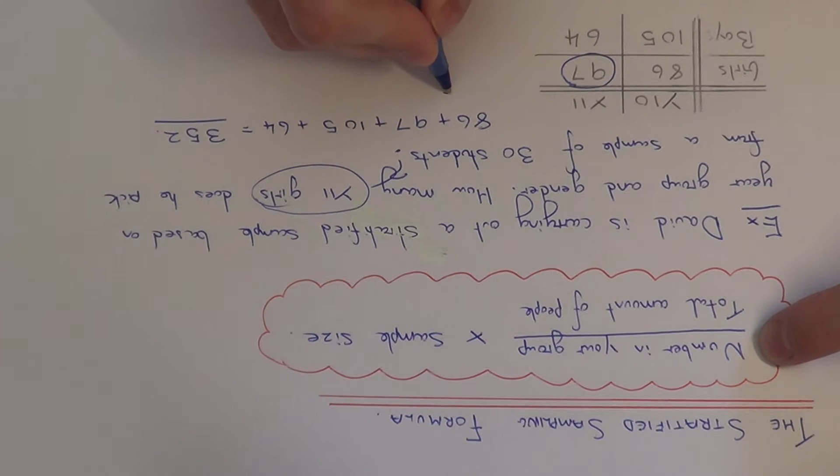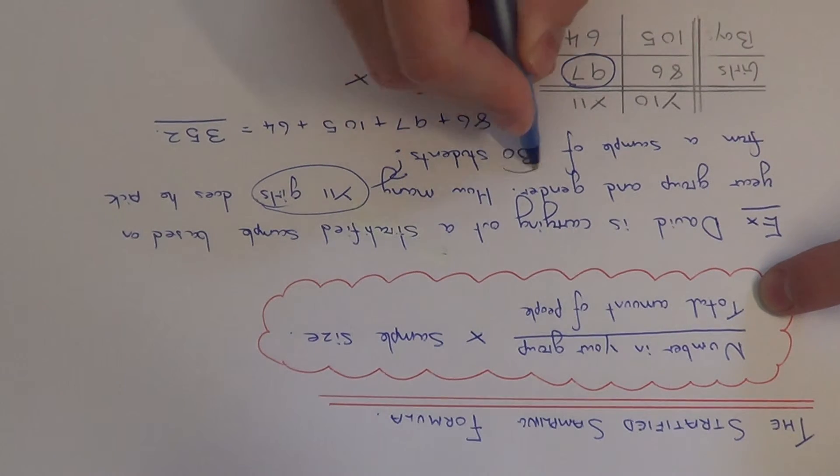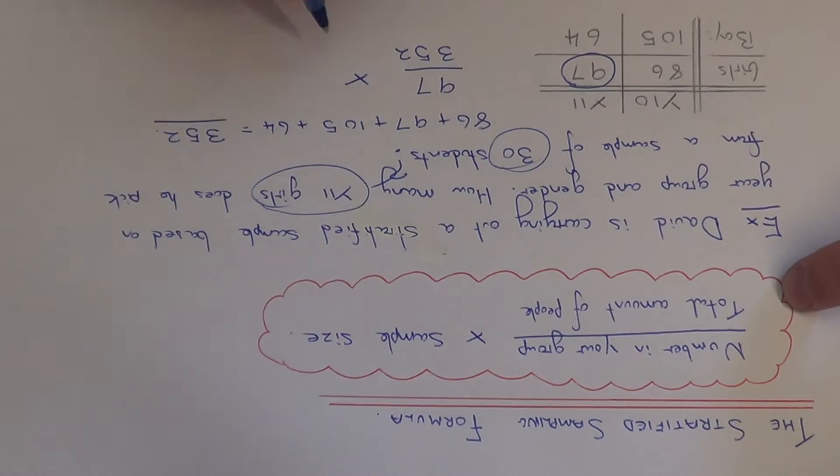So we do 97 divided by the total amount of people which is 352, and then we multiply this by the sample size which is given in the question, which is 30.